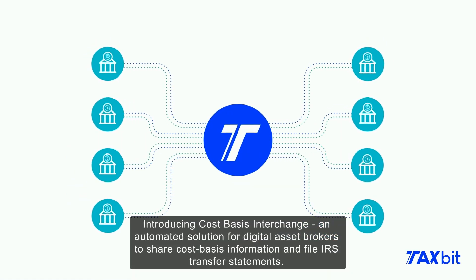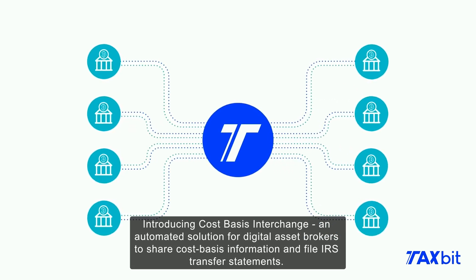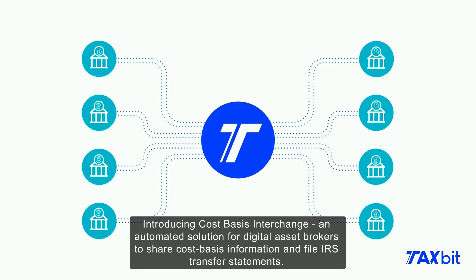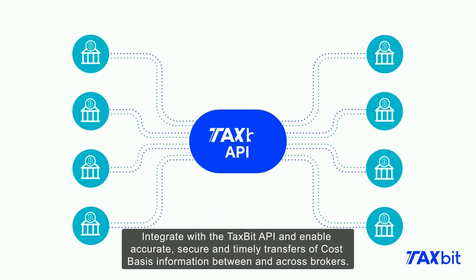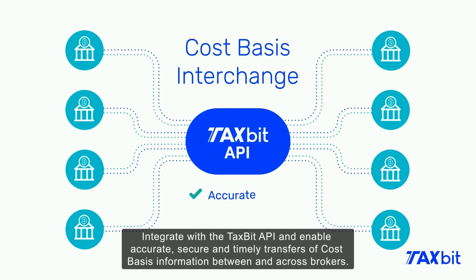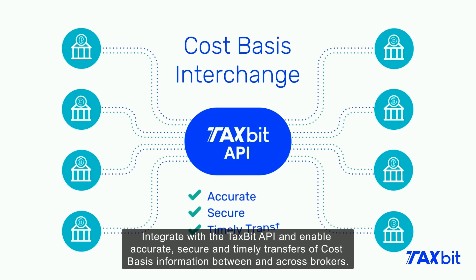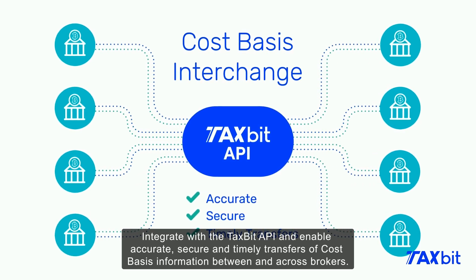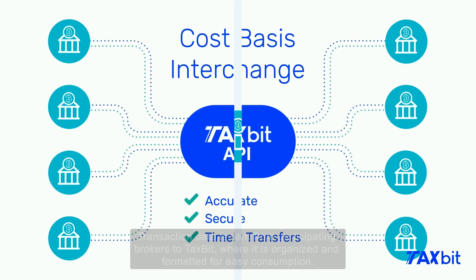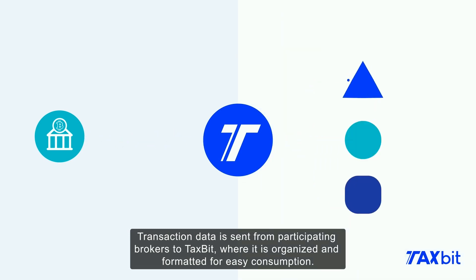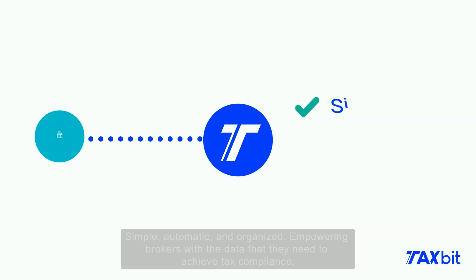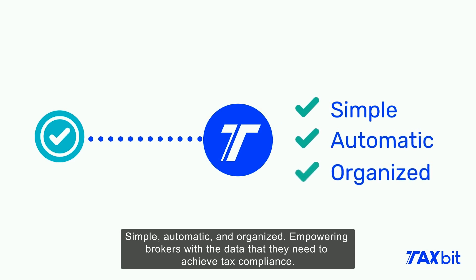Cost Basis Interchange enables brokers to share cost basis information and file IRS transfer statements. Integrate with the Tax Bid API to enable accurate, secure, and timely transfers of cost basis information across brokers. Transaction data is sent from participating brokers to Tax Bid, where it is organized and formatted for easy consumption — simple, automatic, and organized.